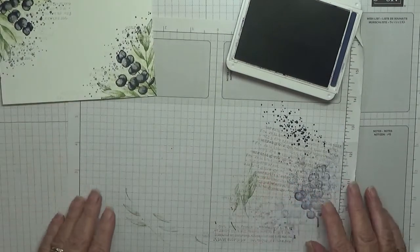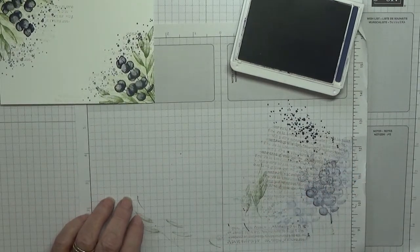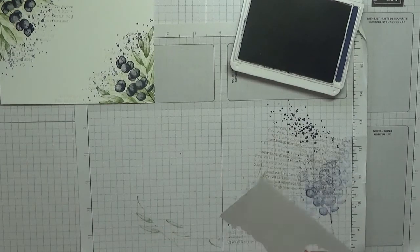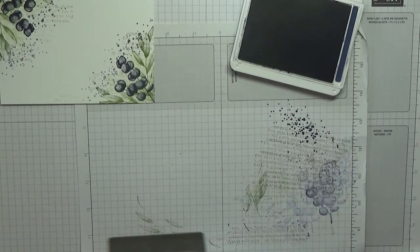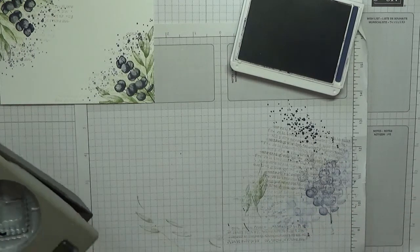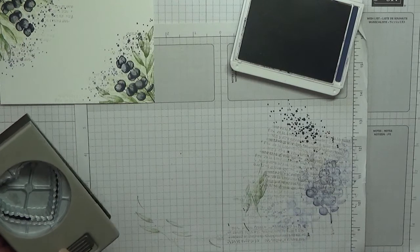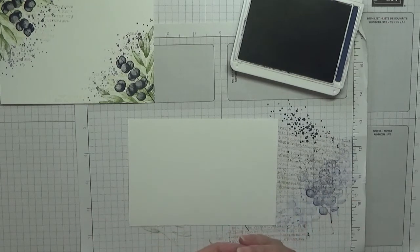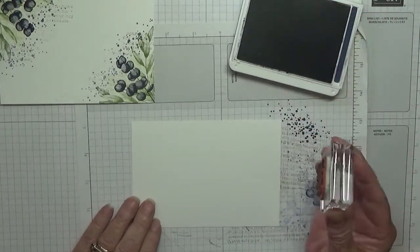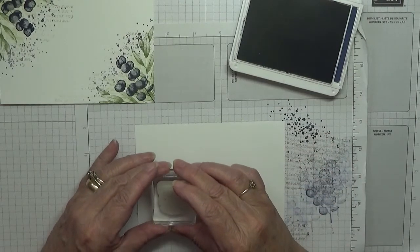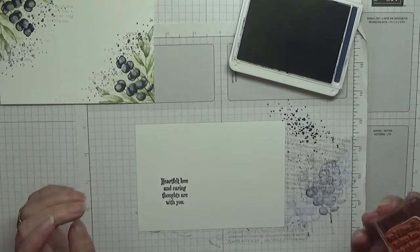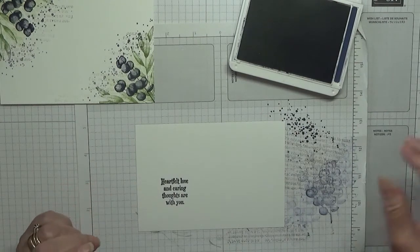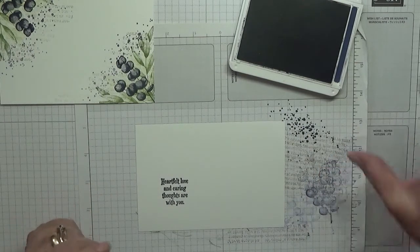So we'll put that to one side and we'll get a scrap of white. I don't think that's big enough, let me see. No, nope, just start a new bit of scrap. So we get our sentiment, and this says heartfelt love and caring thoughts are with you, and we just stamp that down there, like that. Yeah, that's our stamping.